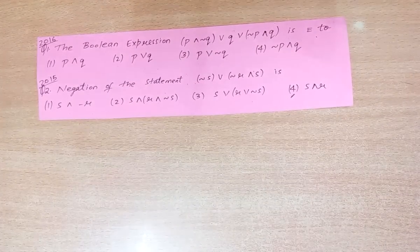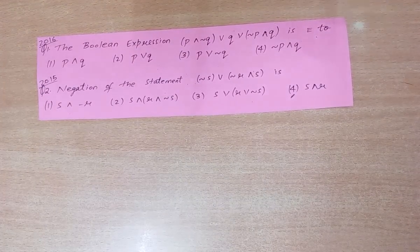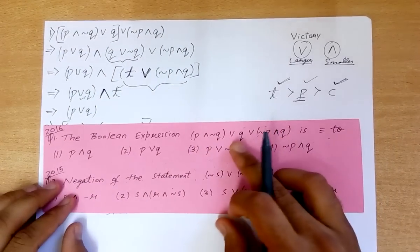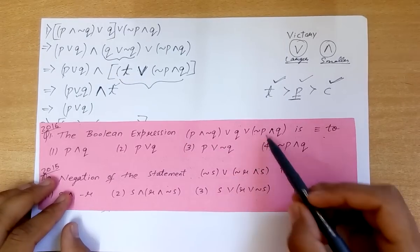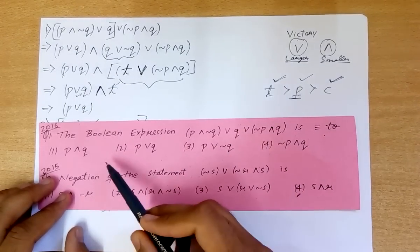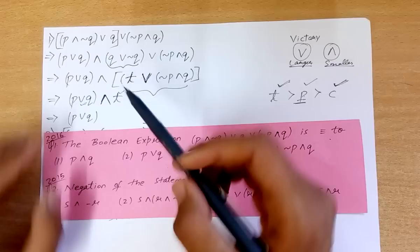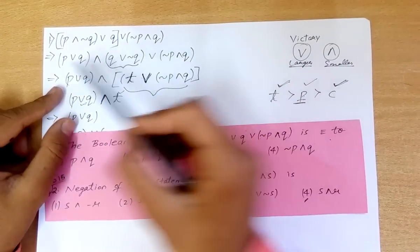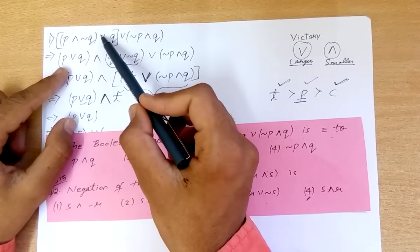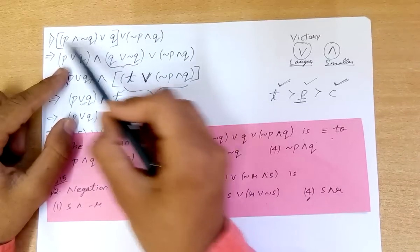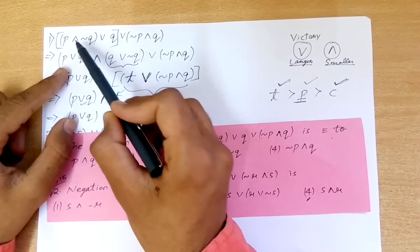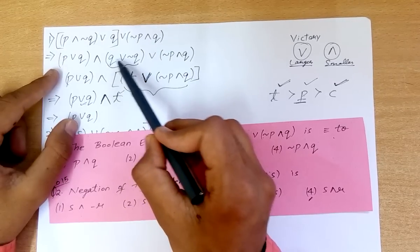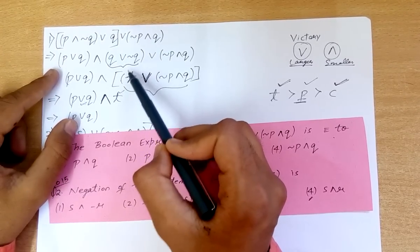Now coming to the previous year questions. The first question: the boolean expression P and (negation of Q or Q) or (negation of P and Q) is equivalent to what? We distribute: (P or Q) and (Q or negation of Q). We know that Q or negation of Q is always true.